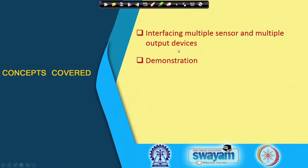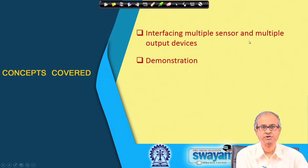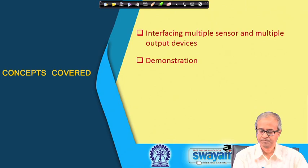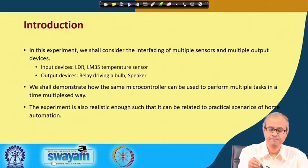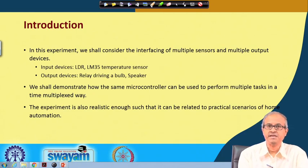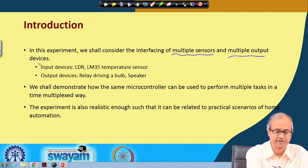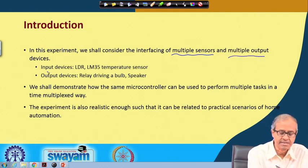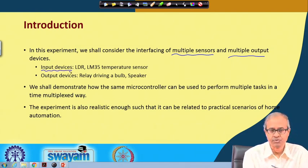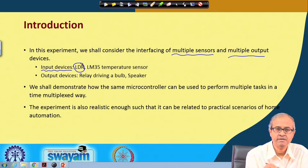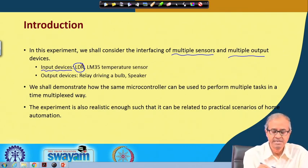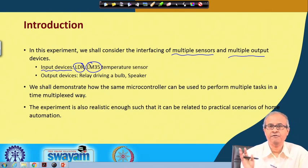Here we shall look at how to interface multiple sensors and multiple output devices. Specifically, the input devices we shall be using are an LDR for sensing ambient light and a temperature sensor for sensing the temperature of the environment.